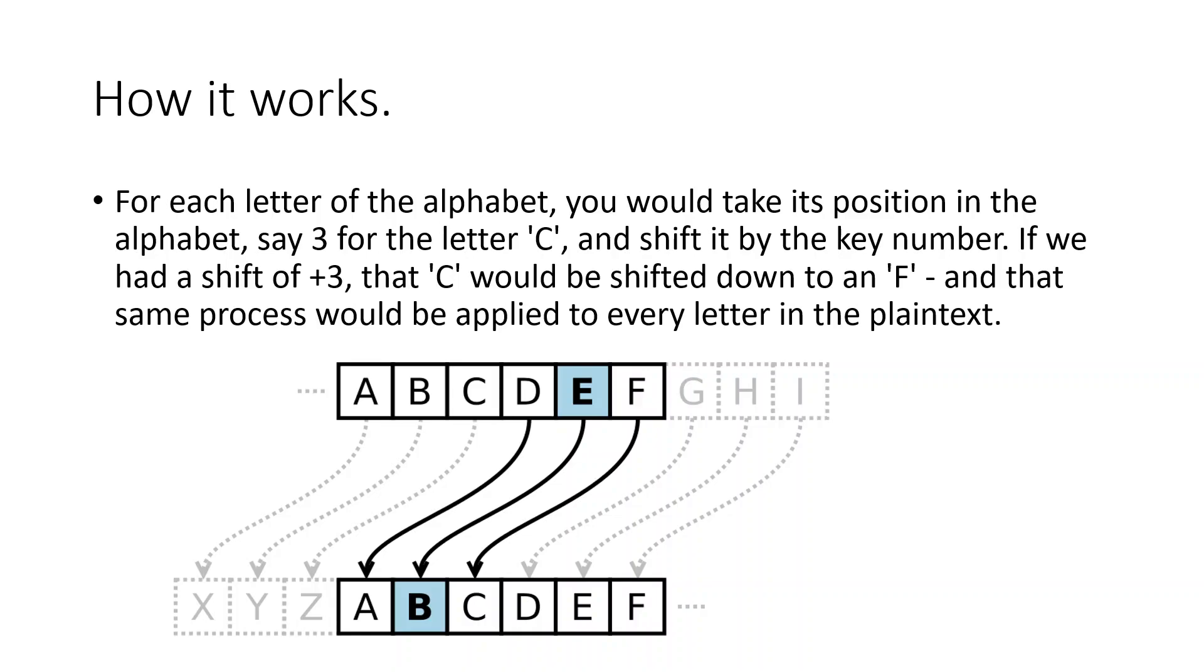In the example in the image there, the shift is actually a negative number. E is position 5 on the alphabet and it is being shifted to B. The shift in the example is negative 3. So it works both ways.